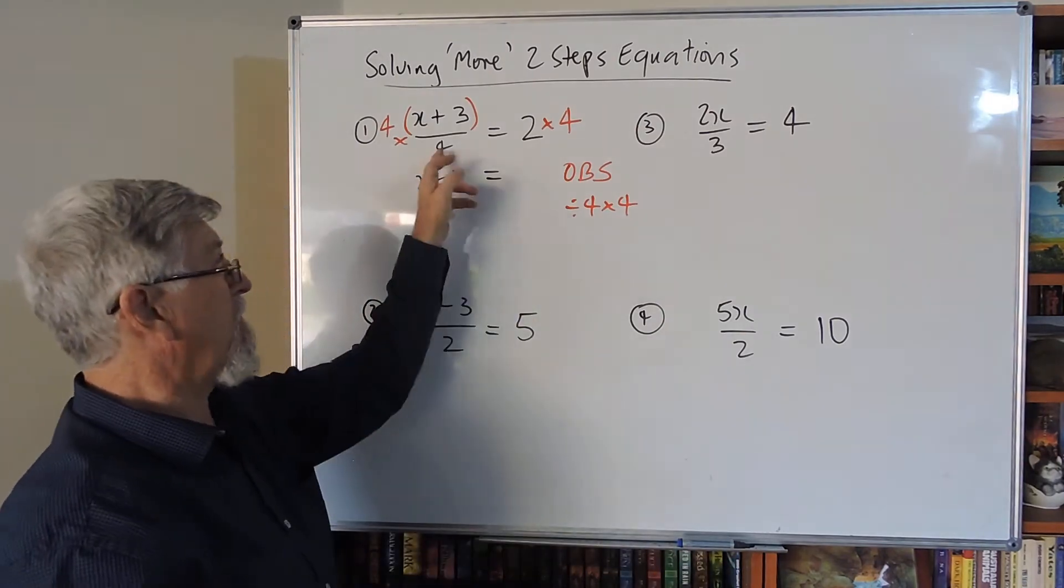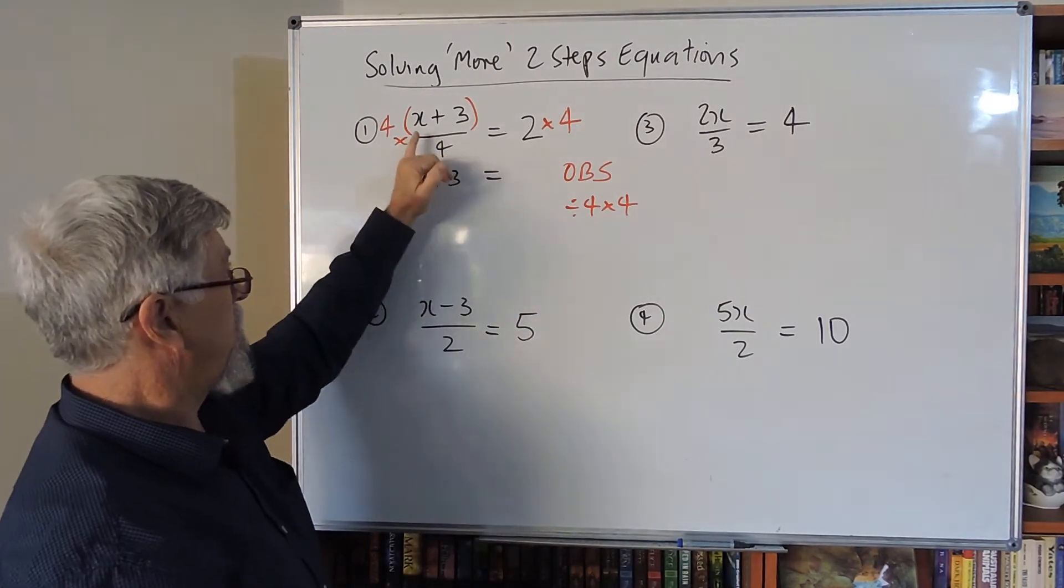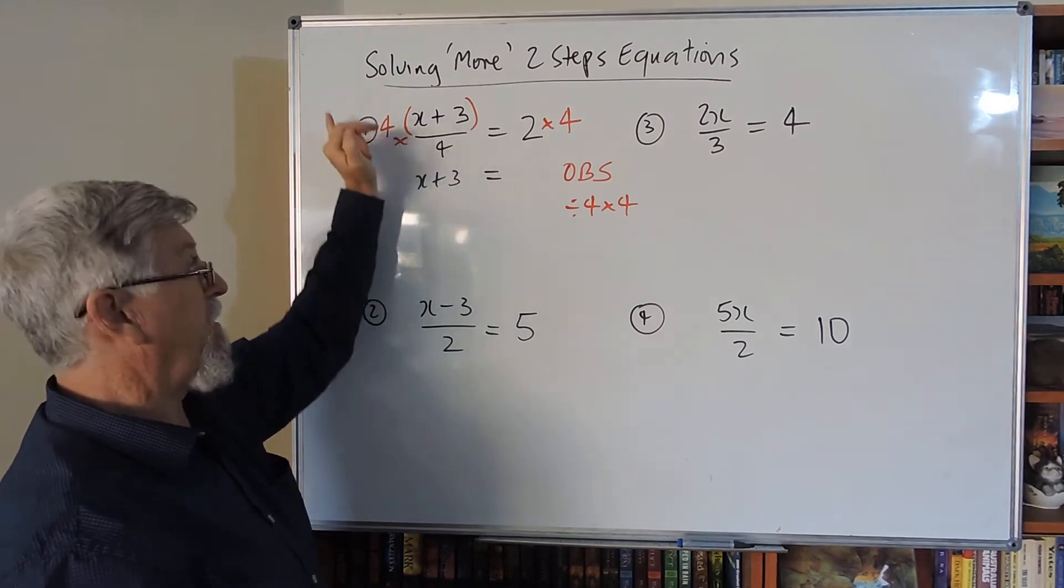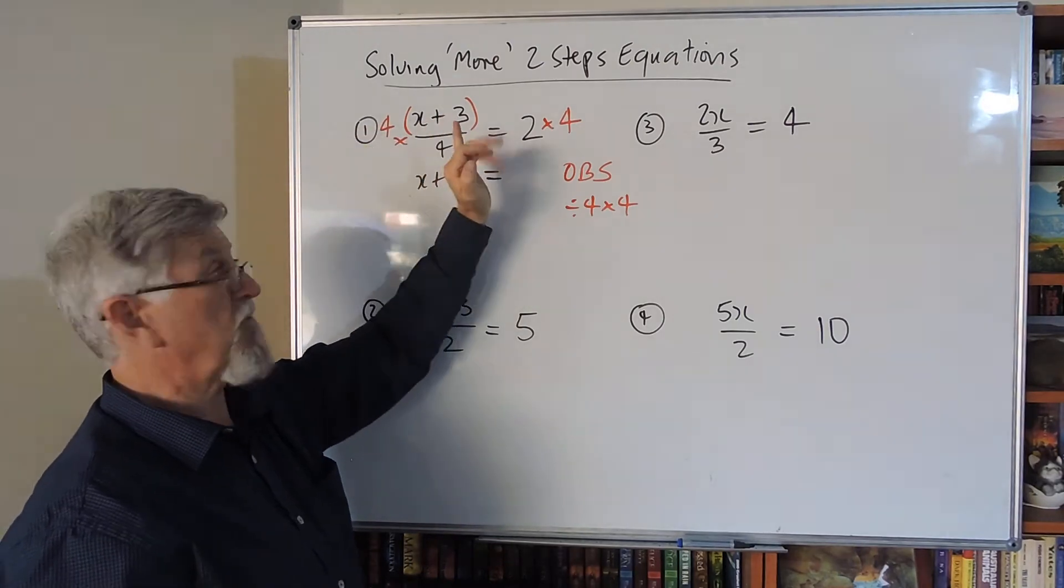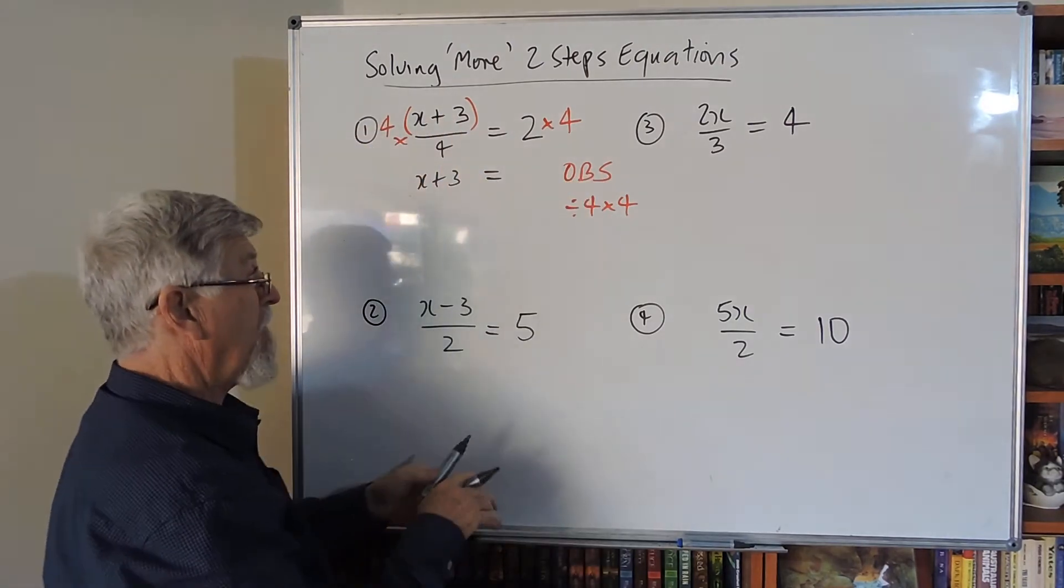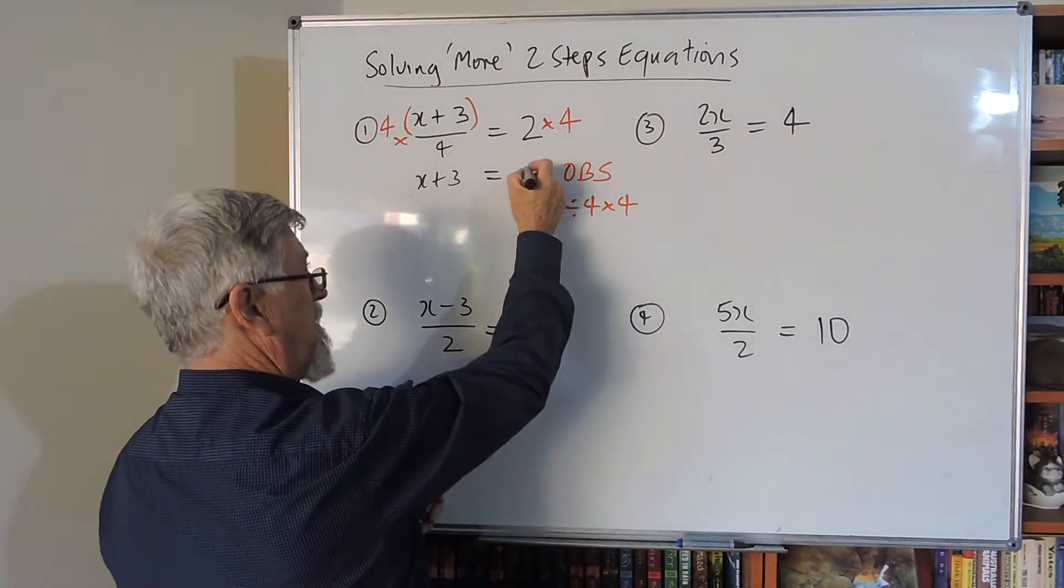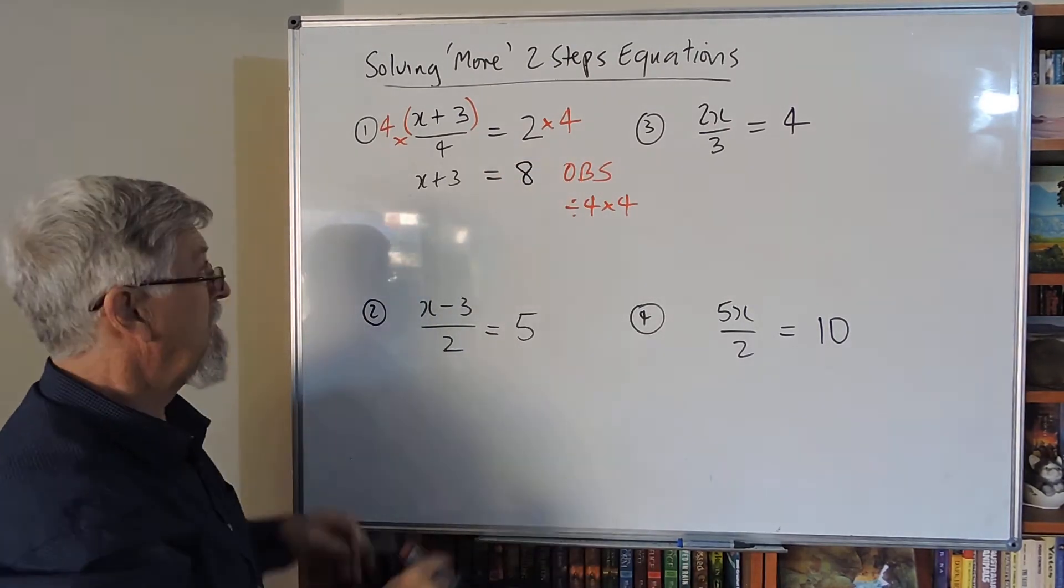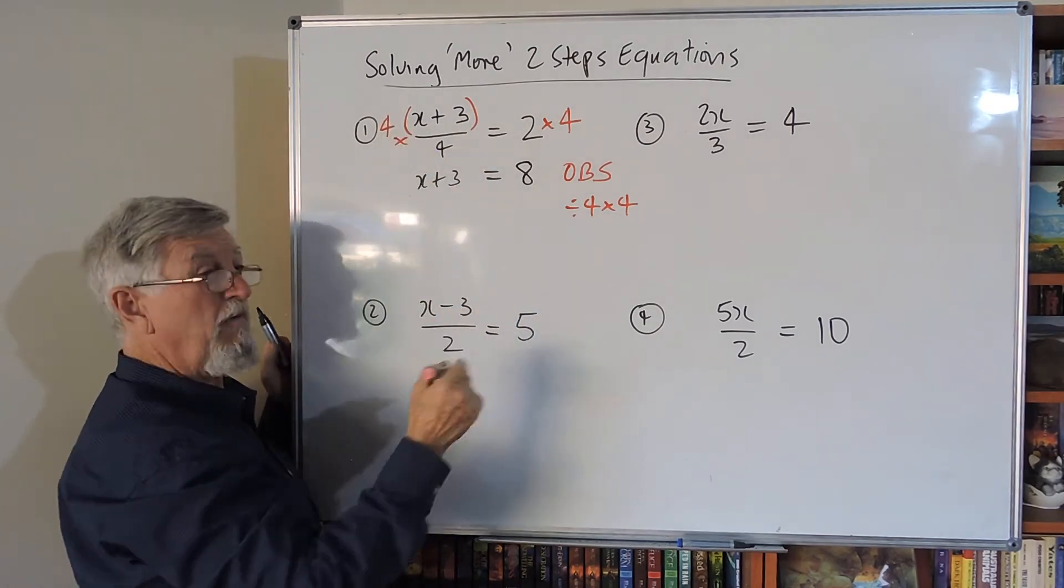Once I get rid of the divide by four—let's have a look at it again—what's the opposite of the divide by four? Times by four. Can't just go subtract three, subtract three. Now that I've got this eight over here, let's change the whole question. First of all, we have to times everything by four.